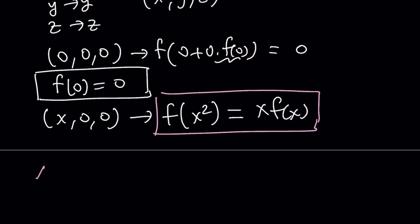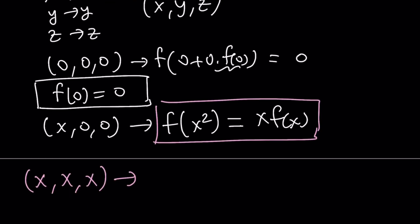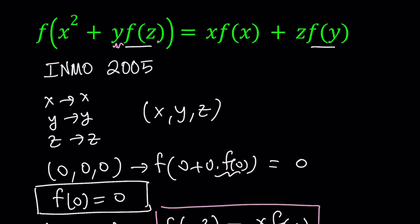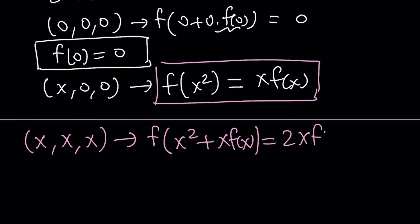Now I'm going to replace x with x, y with x, and z with x — so everything is x. From here we get f of x squared plus x times f of x on the left-hand side, and on the right-hand side x times f of x plus x times f of x, which is just 2x times f of x. This is useful because we now have something for x times f of x that we can use together with the previous result.